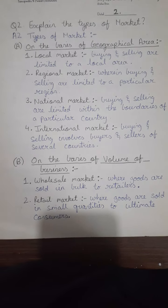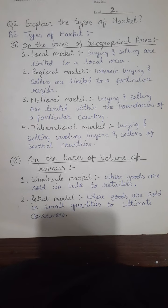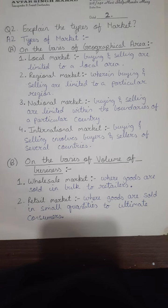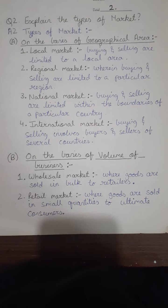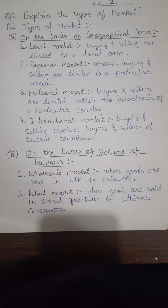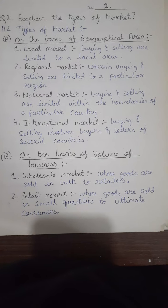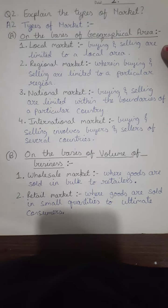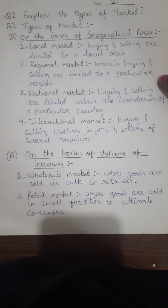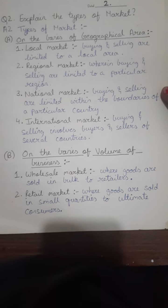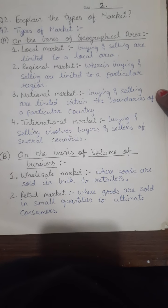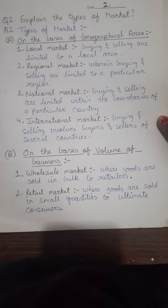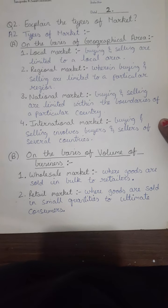Market is divided into the following types. First, on the basis of geographical area: local market, regional market, national market, and international market. Where buying and selling are limited to a particular local area, that is a local market. Limited to a particular region is a regional market. Within the boundaries of a country is a national market. And where buyers and sellers of several countries are involved, that makes an international market.